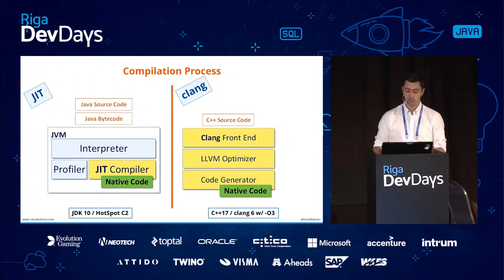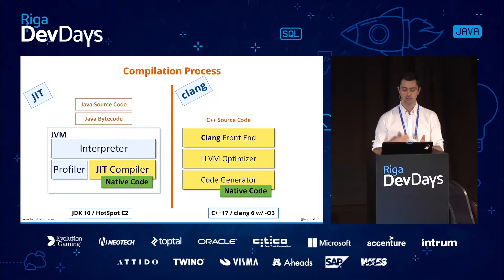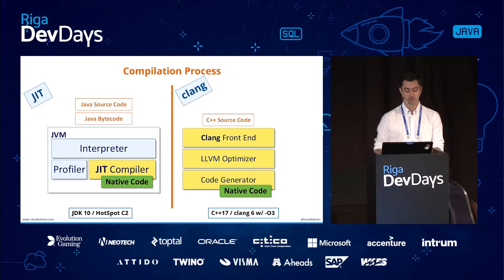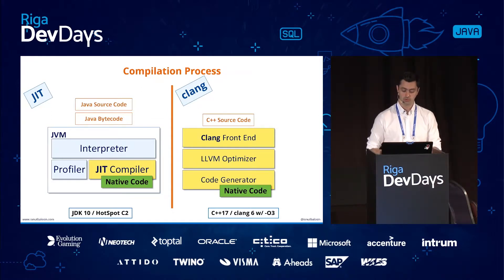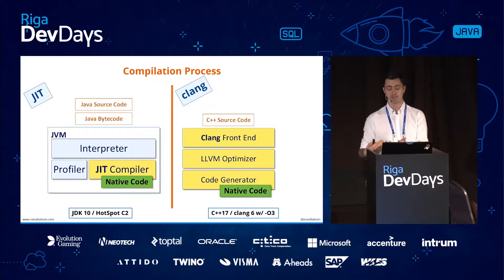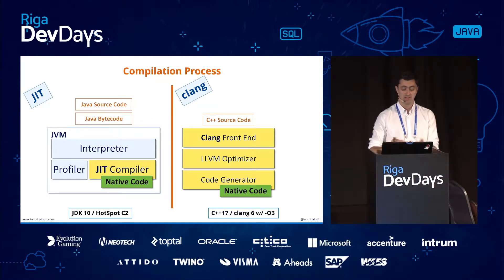The compilation process is very different. On the Java side, the source code is compiled and translated to bytecode. Then at runtime, the interpreter kicks in, and once methods become hot spots, they are compiled to native code. On the C++ side with Clang, there are three stages: the front-end, an optimizer, and the code generator. Everything happens ahead of time, so once you run that binary, it is already compiled.